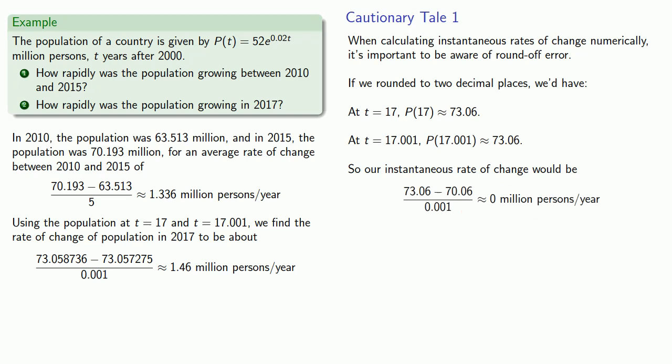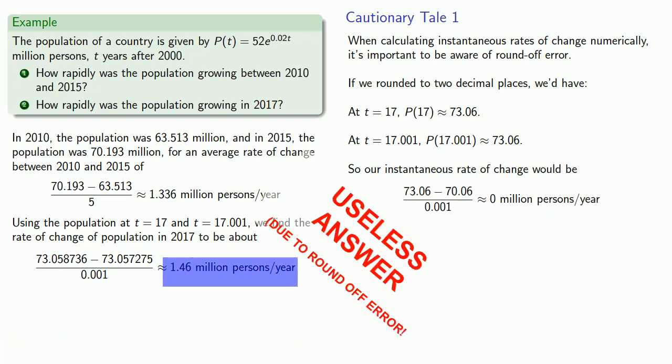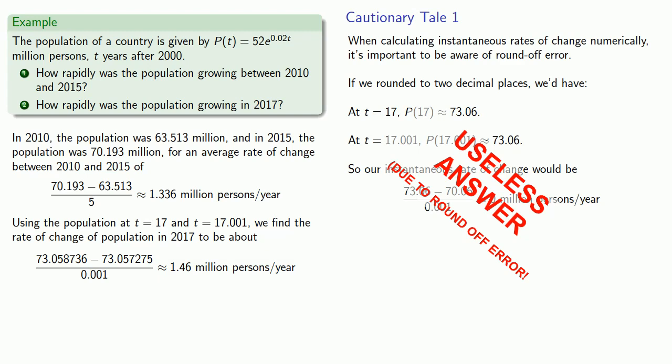But that's completely wrong. The reason it's wrong is that we've rounded off and then used these rounded numbers.